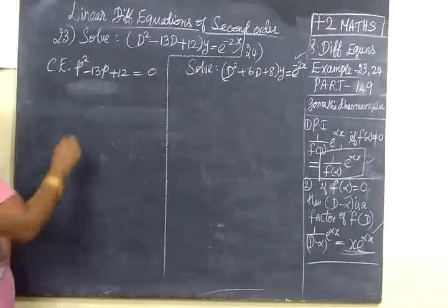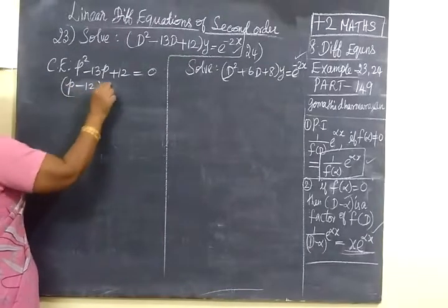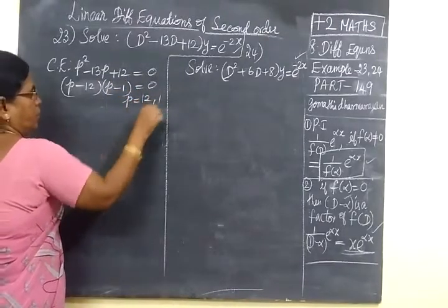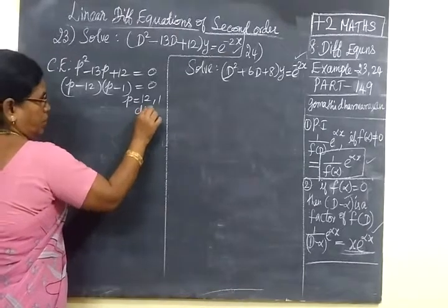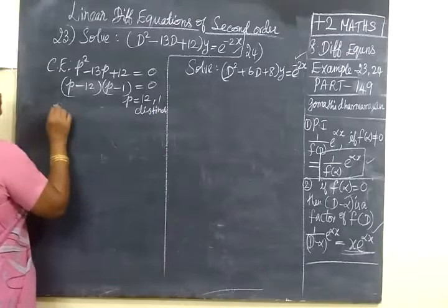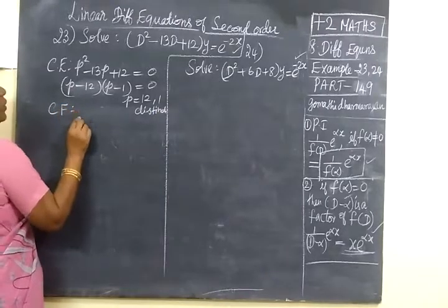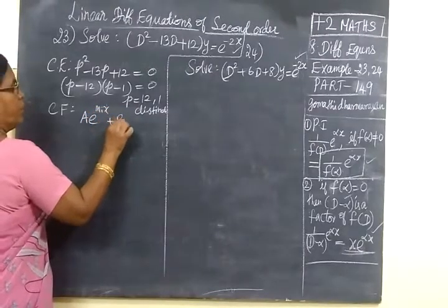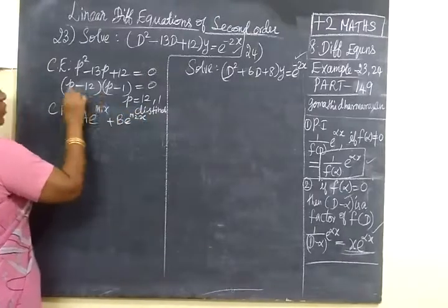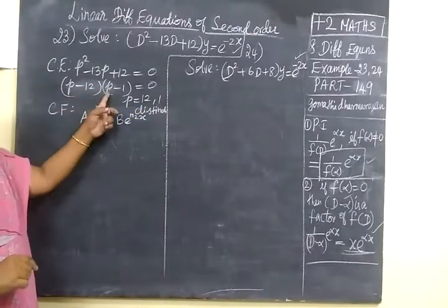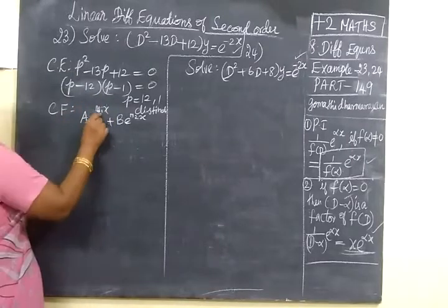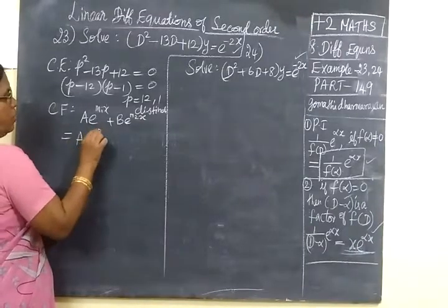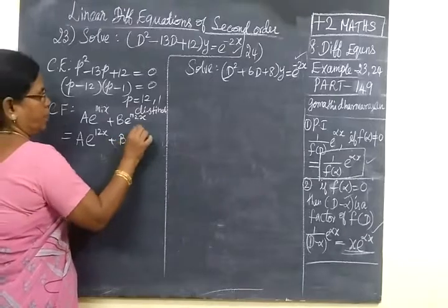First we are finding the complementary function. So p minus 12, p minus 1 equal to 0. This implies p equal to 12 and 1. Here the roots are distinct. For distinct roots, the complementary function is a e power m1 x plus b e power m2 x.